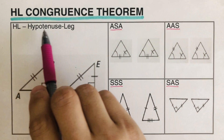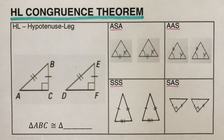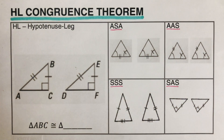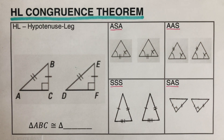Today we're going to be taking the hypotenuse-leg theorem. This HL works only for right triangles, but not every right triangle is HL — not every right triangle can be proven through HL.